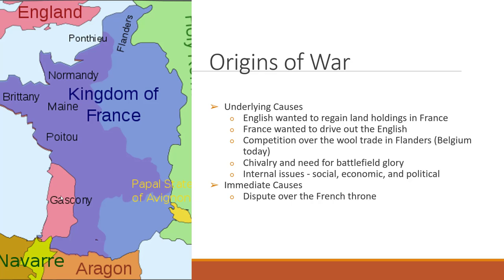On July 27th, 1214, the French had a major victory and pushed the English out of much of their French land. After 1214, the only land the English controlled in France was the territory called Gascony in red. The other purple territory was absorbed into the unified French kingdom under Philip Augustus, creating tension from 1214 all the way into the 1330s.